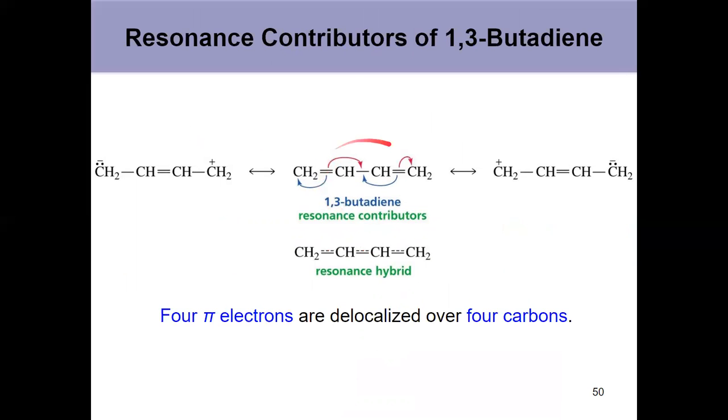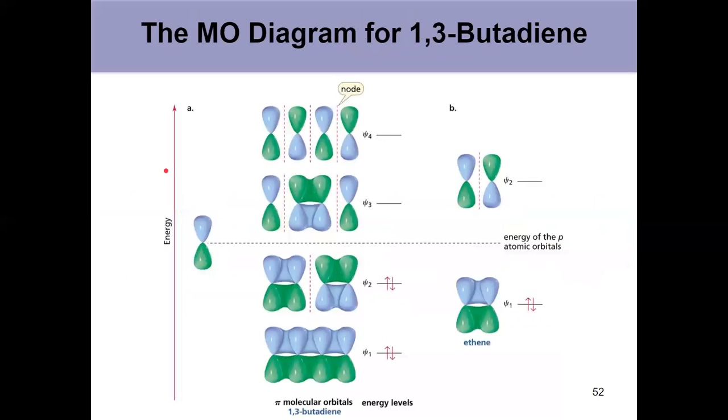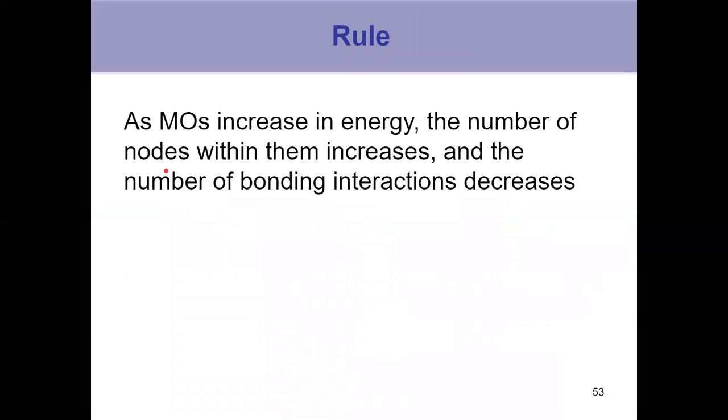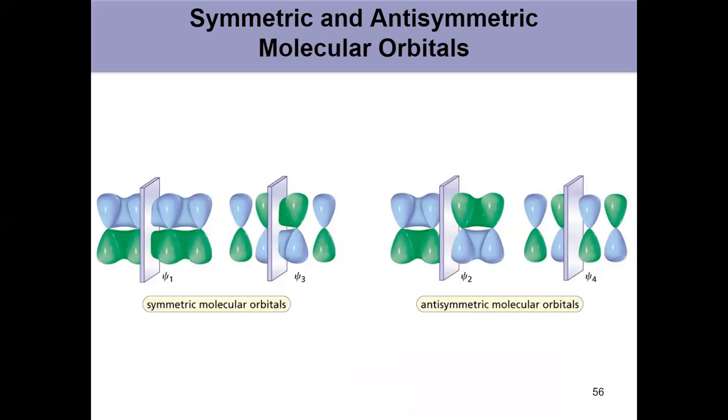And we know by resonance that if you draw the three resonance contributors, looking at those resonance contributors. This is the most stable resonance contributor with electron density between C1, C2, and C3, C4. But if you look at the minor contributors, there's some bonding density between C2 and C3 as well. And so you see molecular orbital diagrams and those resonance contributors kind of relate to one another.